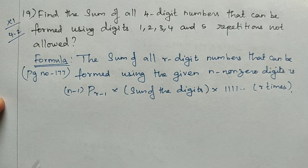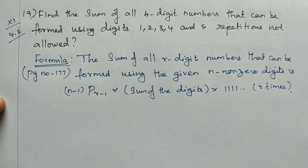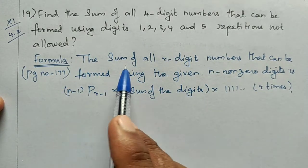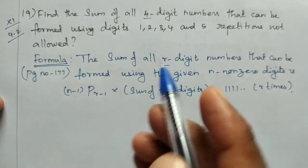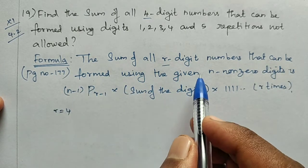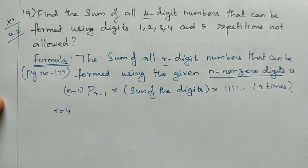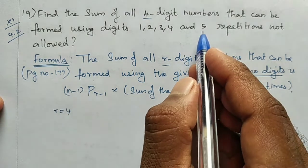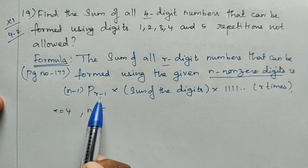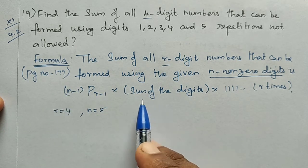Using a formula is better here. The sum of all four-digit numbers — where r is equal to 4 — that can be formed using the given n non-zero digits. For n non-zero digits, the formula is: (n−1)P(r−1) into the sum of all digits. This is from page number 177.